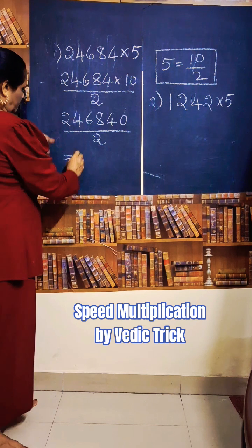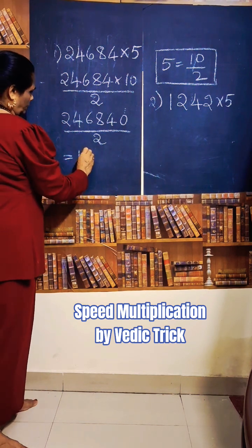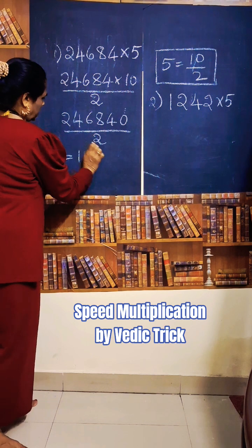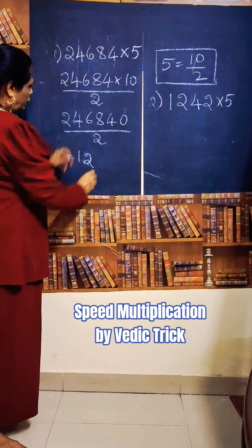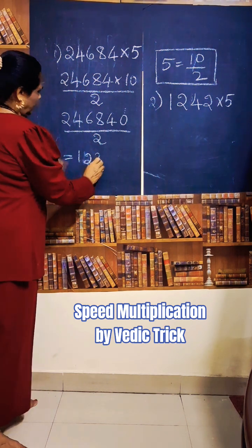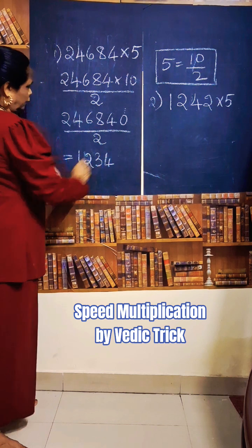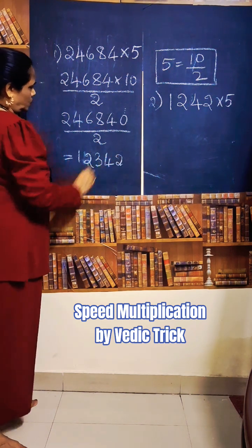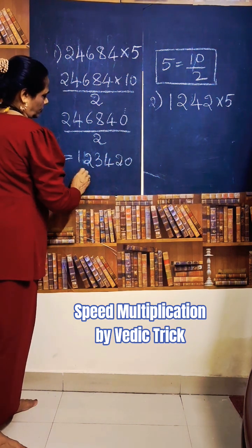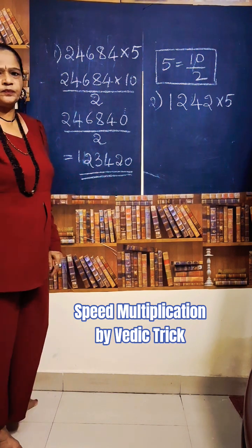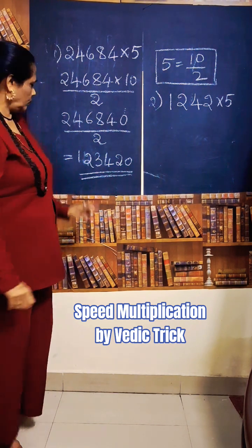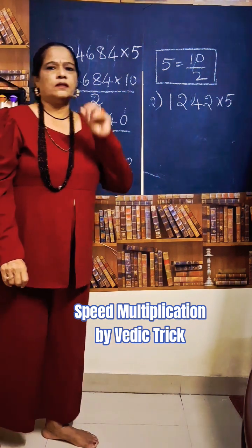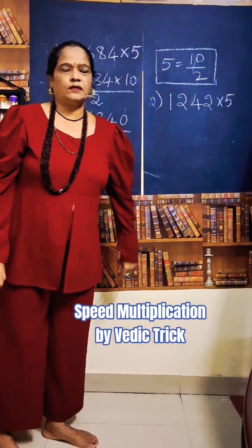Now we see: 2 divided by 2 is 1. 4 divided by 2 is 2. 6 divided by 2 is 3. 8 divided by 2 is 4. 4 divided by 2 is 2. And 0. So the answer is 1,23,420.